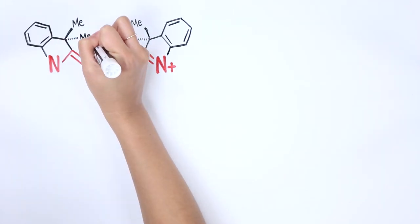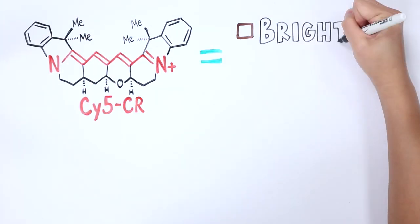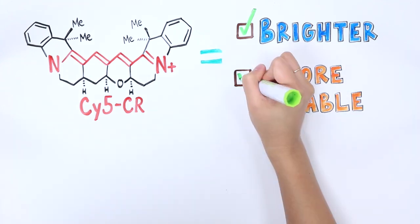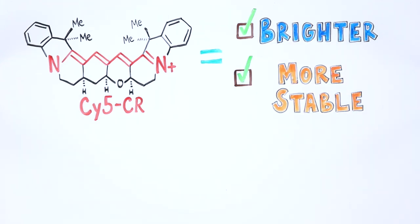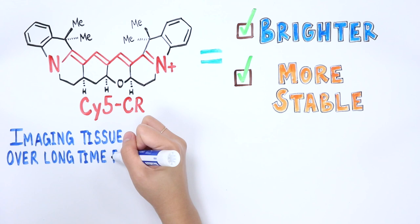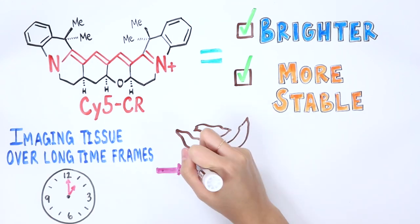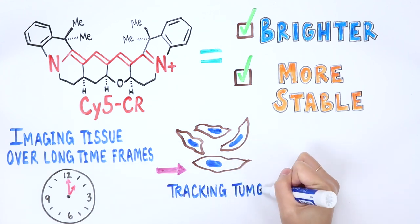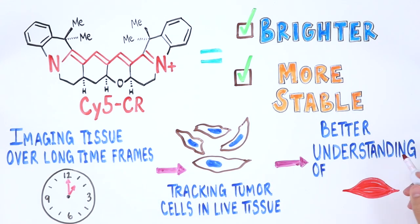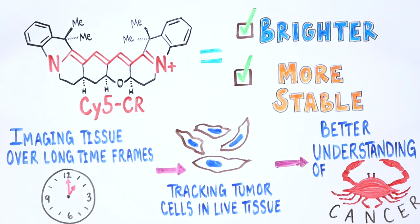Going forward, these newly synthesized Cy5 far-red fluorescent probes are brighter and more stable than the currently available counterparts, which means they could be used for imaging live tissue over long timeframes. These promising properties point to several applications, such as tracking tumor cells and live tissues, which could lead to a better understanding of how cancer behaves in a living system.